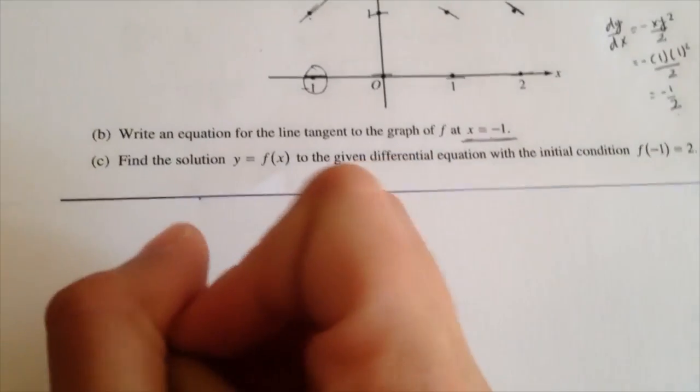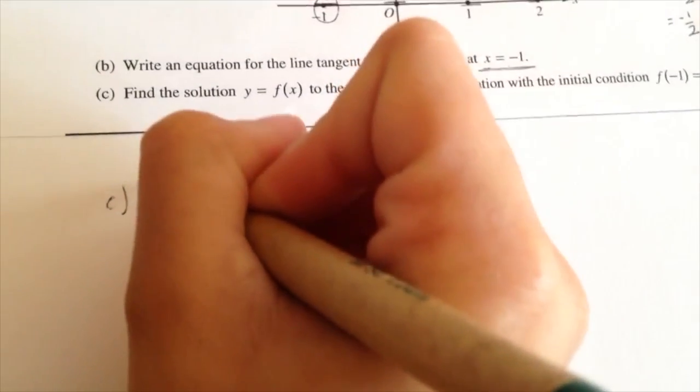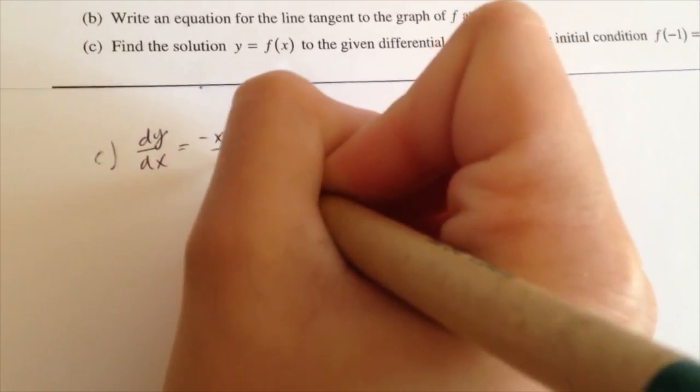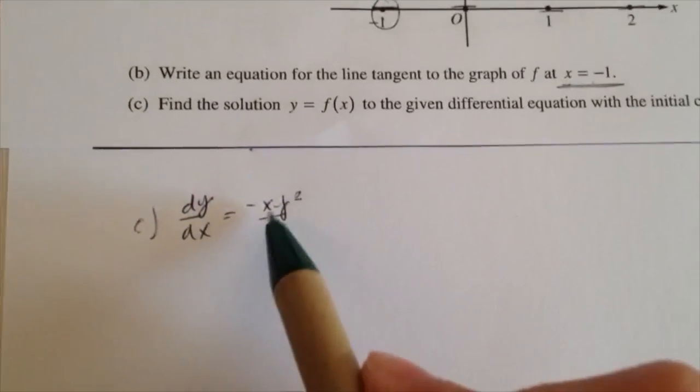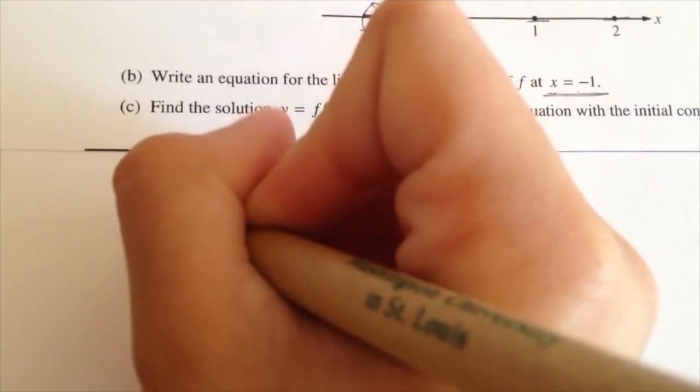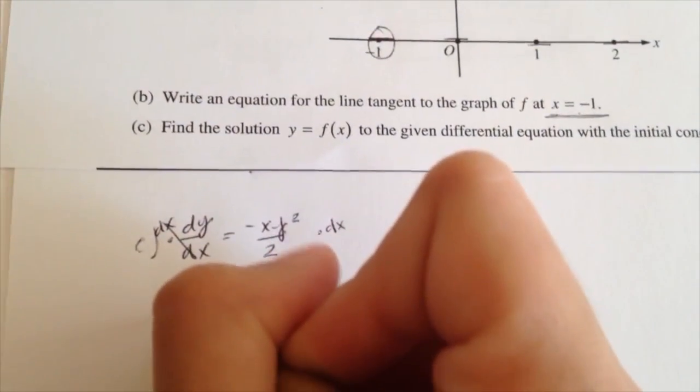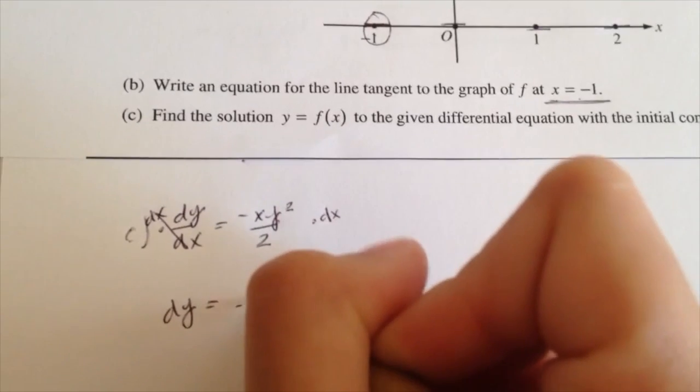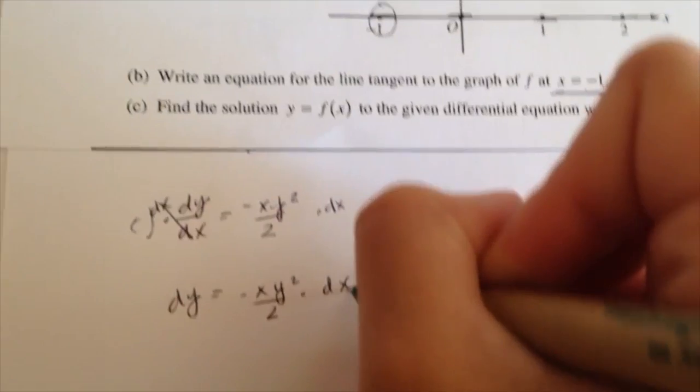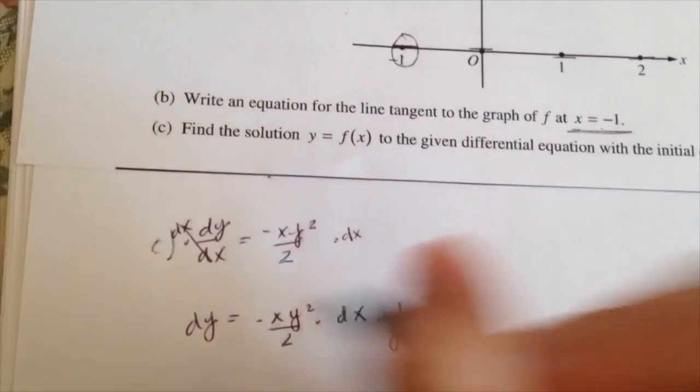So on this part, on part C, you use the equation dy over dx equals negative xy squared over 2. And your first step is to separate the variables. So you multiply dx to both sides. So dy equals negative xy squared over 2 times dx. And to separate the y, you have to multiply 1 over y squared to both sides.